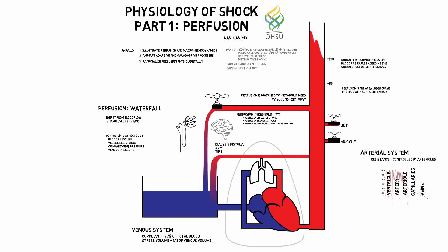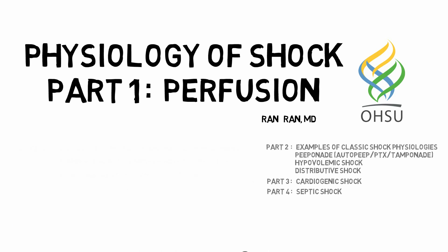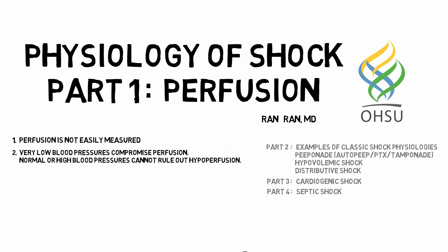So what can we summarize about shock and perfusion? Shock is a clinical diagnosis and can sometimes be difficult to recognize because we don't have any good ways of measuring perfusion clinically. As a general rule of thumb, very low blood pressures means low perfusion. However, normal or high blood pressures cannot rule it out. How low is very low? No one knows. Certainly systolics in the 50s is bad for everyone including babies, but systolics in the 80s in an 80-pound female might actually be fine.